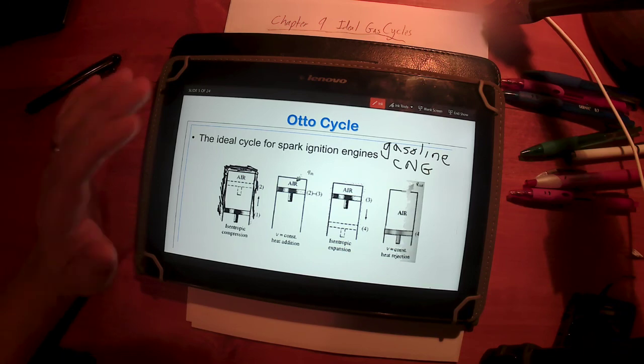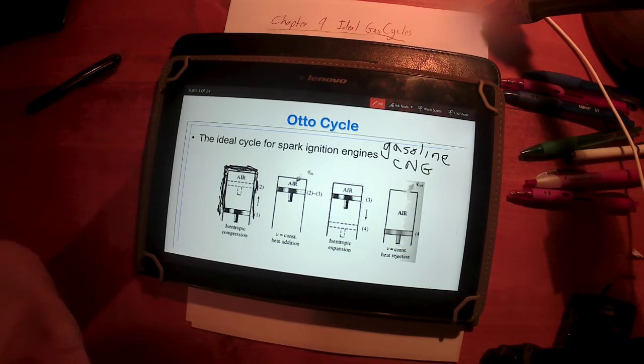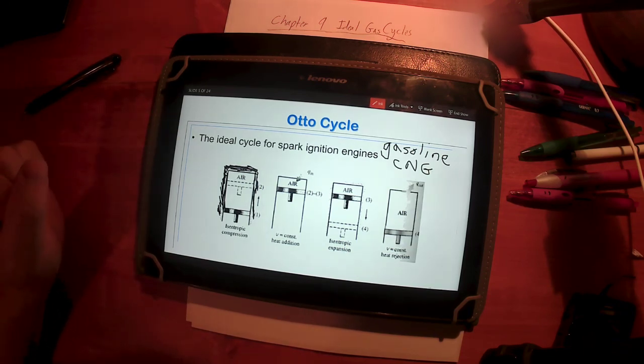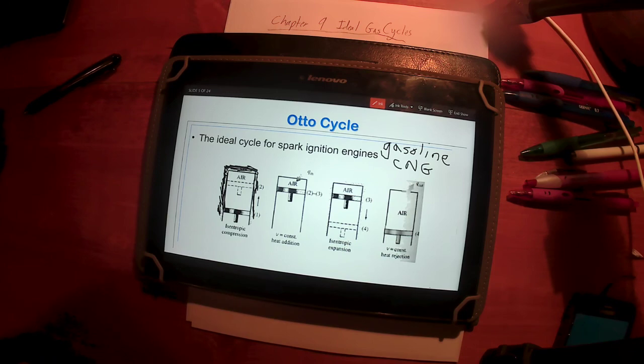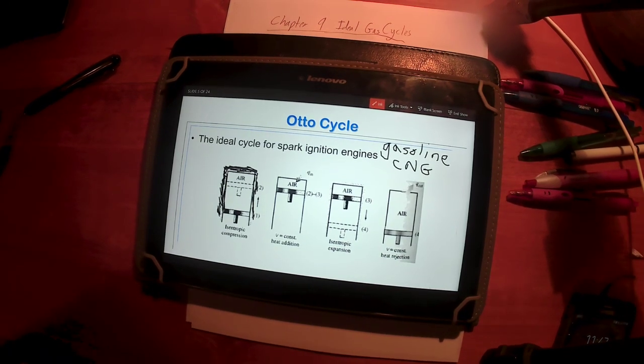Now, the Otto cycle, again, the ideal cycle that mimics the spark ignition sequence, starts out first with an isentropic compression. That's not a bad place to stop. We'll continue on there on the next video. So I'll see you next time. Thank you.